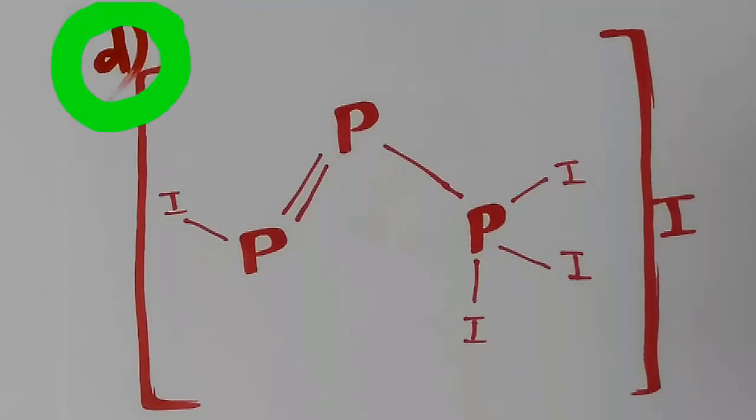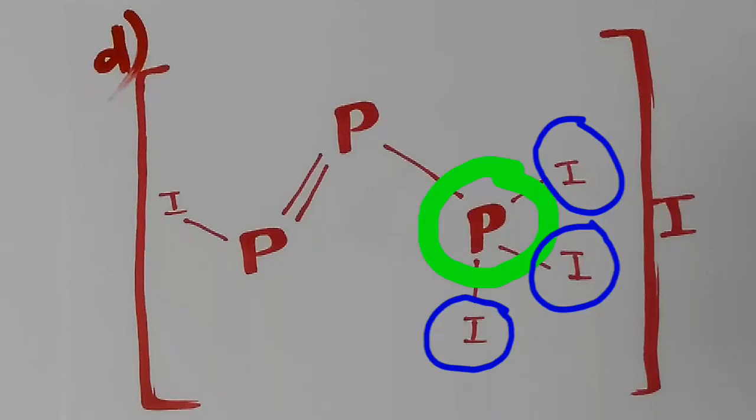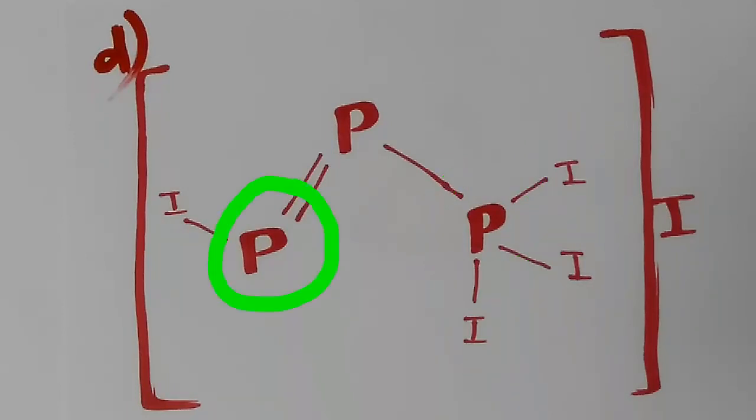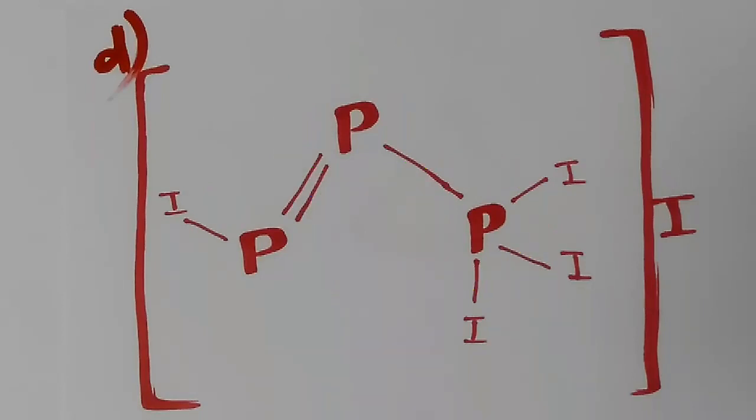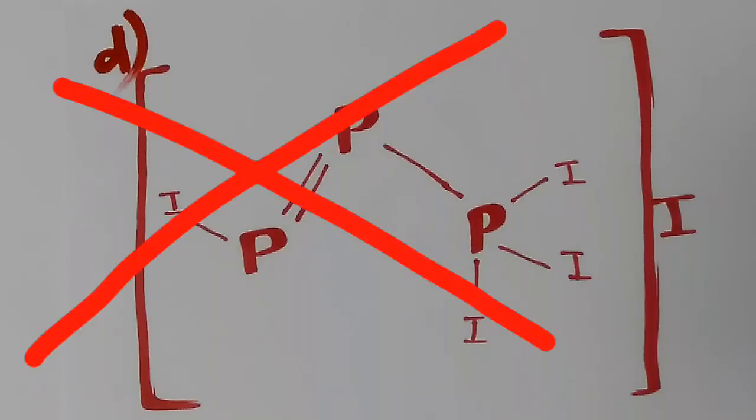In option D, this phosphorus is attached to three iodine, this phosphorus is attached to one iodine, and this phosphorus is attached to none. Therefore, all three phosphorus have different environment. Therefore, it will give three different signals. Again, option D is also the wrong choice.